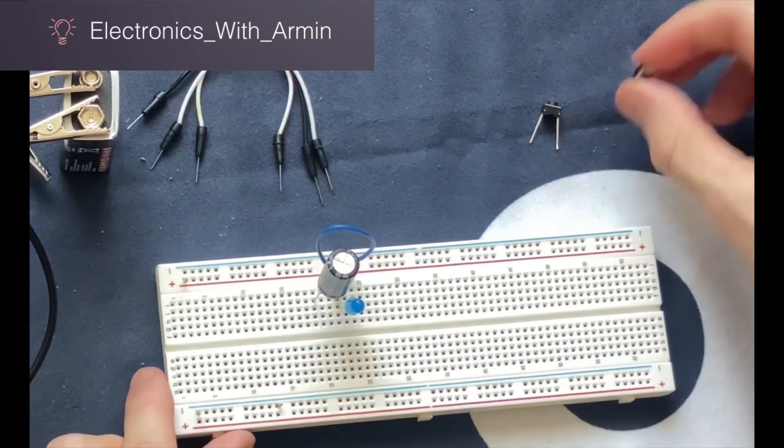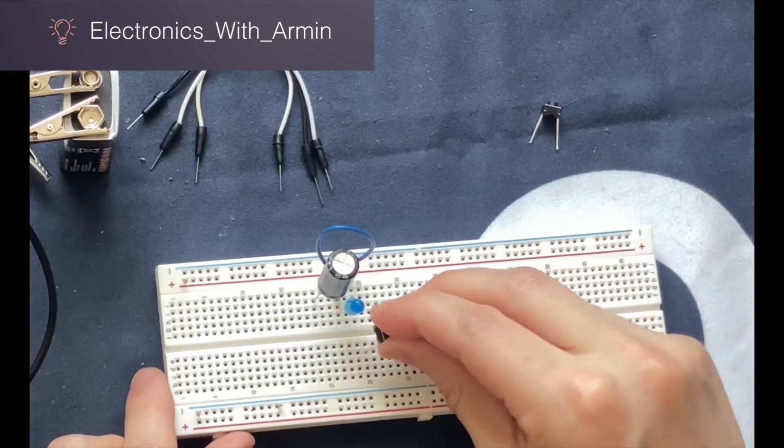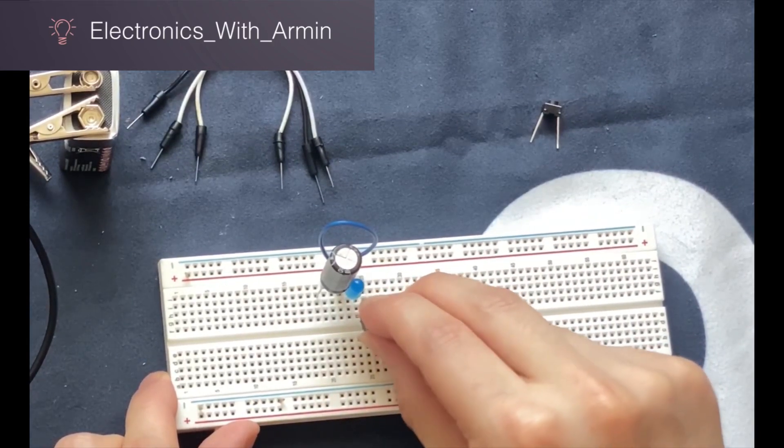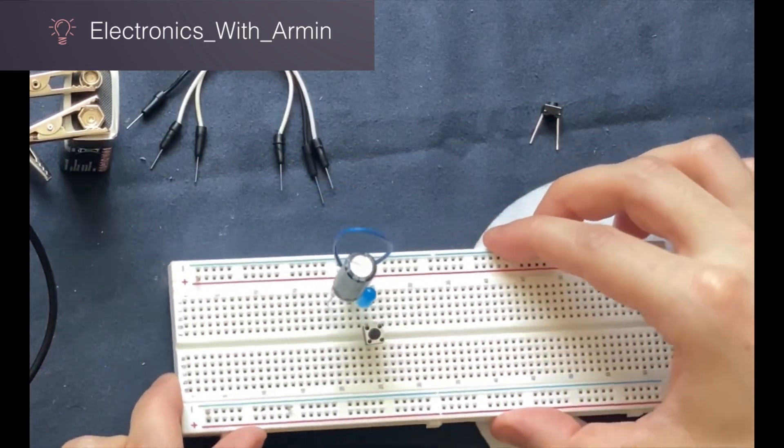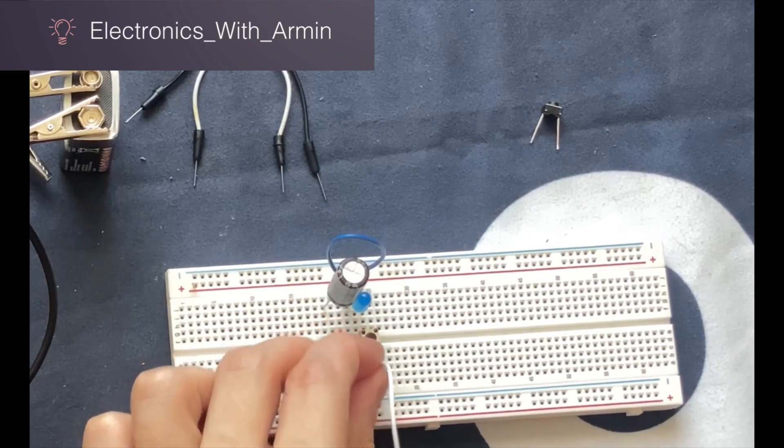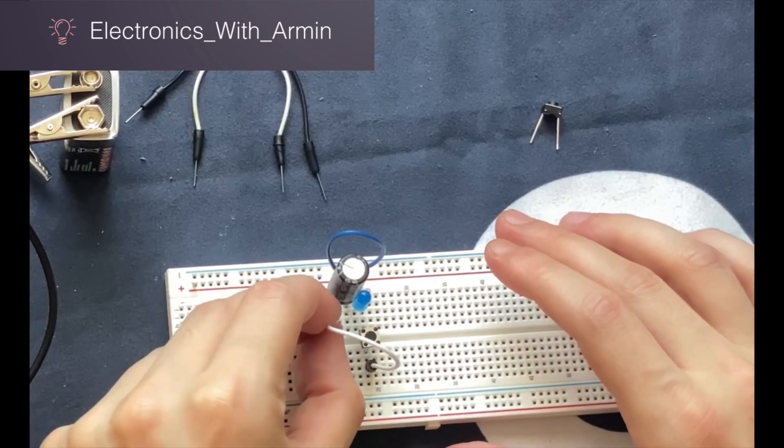Then we are going to connect our push button switches. I will connect one of these push button switches in the negative leg of the LED, which is cathode, and the other side of the switch will be connected to the cathode of the capacitor.